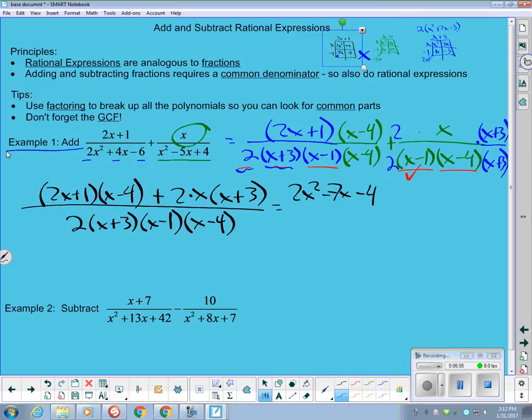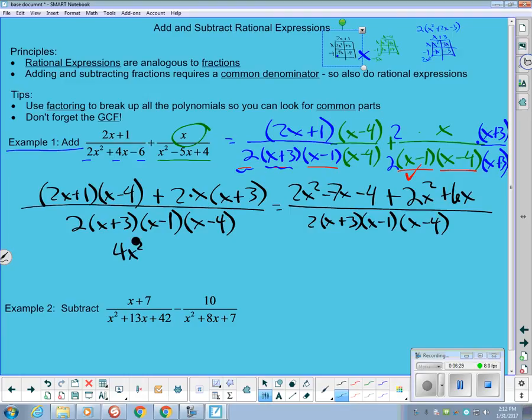And when I multiply these second ones together, that's just distributing 2x through there. So that's 2x² + 6x. And it is still all over 2(x + 3)(x - 1)(x - 4). And when I combine things in the numerator then, I get 4x² - 1x - 4 all over 2(x + 3)(x - 1)(x - 4).